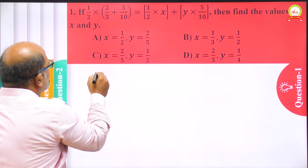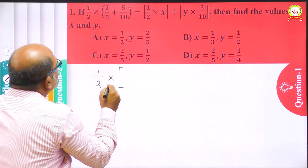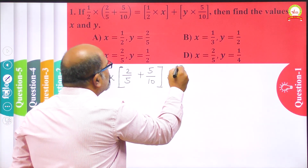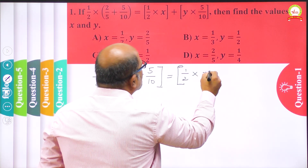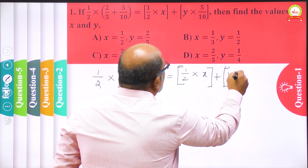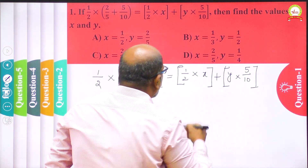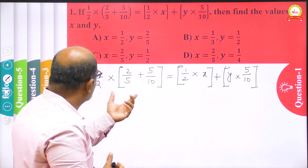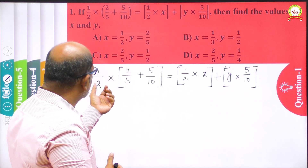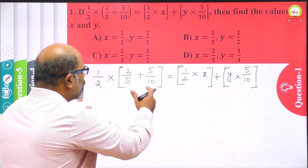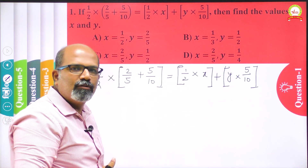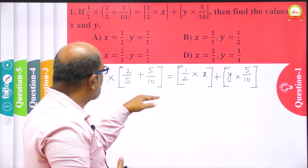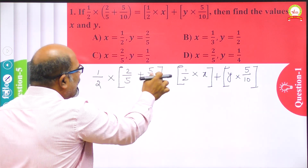I want to take the equation: 1/2 multiplied by x plus y multiplied by 5/10. When I look at the left-hand side part of this equation, I can observe that this is actually in the form of distributive property — that is, distributive property of multiplication over addition. When I look at both sides I can recognize that idea.